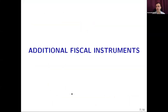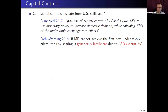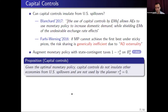Given that allocation is still suboptimal with optimal monetary policy, how much can we do better with additional instruments? We start with capital controls. The conventional wisdom formulated by Olivier Blanchard is that emerging markets can shield their domestic economies from undesired exchange rate effects through capital controls. There is also a general result by Farhi-Werning that if monetary policy cannot achieve first best, risk sharing is generically inefficient due to aggregate demand externality, which would imply capital controls are optimal. However, we find that capital controls are ineffective and the domestic planner does not use them in equilibrium.